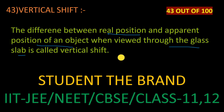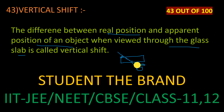So if you see through the glass slab — actually, here is the real position of the coin. When you are seeing through the glass slab, it will appear somewhat risen from its actual position. This is the real position and this is the apparent position.